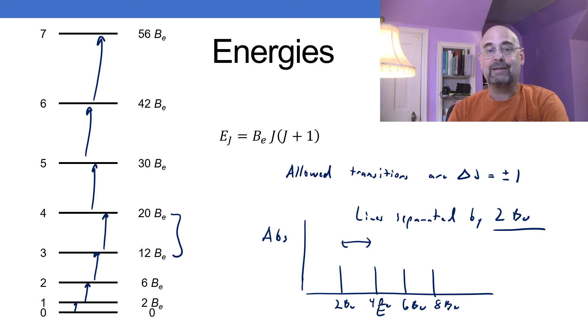Remember, the rotational constant gives me information on the bond length. And so if I can look at these series of lines and just simply find out the spacing between those to a zero-order approximation, this could be two times the rotational constant. I can just now take that number, get the rotational constant, and get the bond length out.